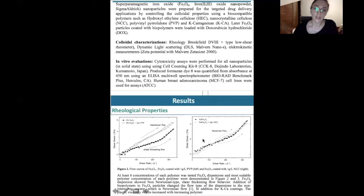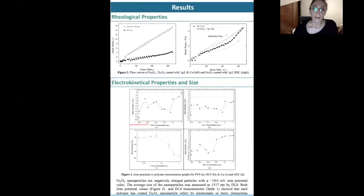Then we moved on to electrokinetical properties and size. Here we have four graphs, each for one polymer. We have plotted the zeta potential versus polymer concentration in graphs, and according to these graphs, all polymers except nanocrystalline cellulose covered the particle surfaces. Nanocrystalline cellulose seems to only partially cover the particle surface.